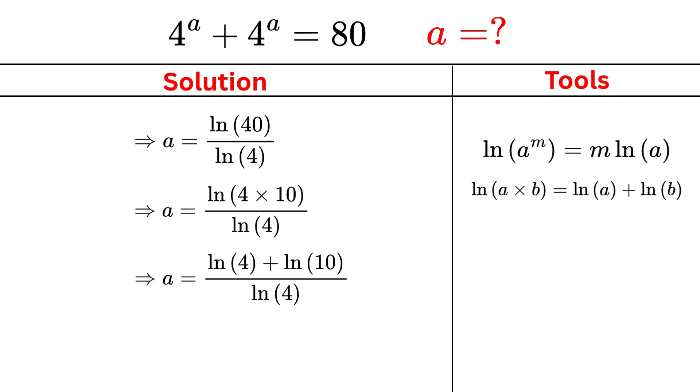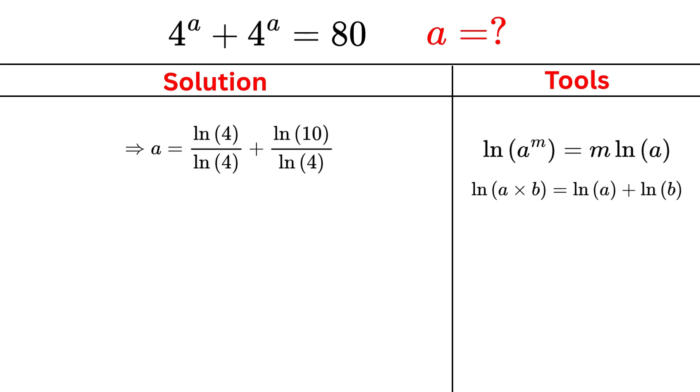Now we divide each term in the numerator by log(4). That gives us log(4) / log(4), which is 1, plus log(10) / log(4). So we now have a = 1 + log(10) / log(4).